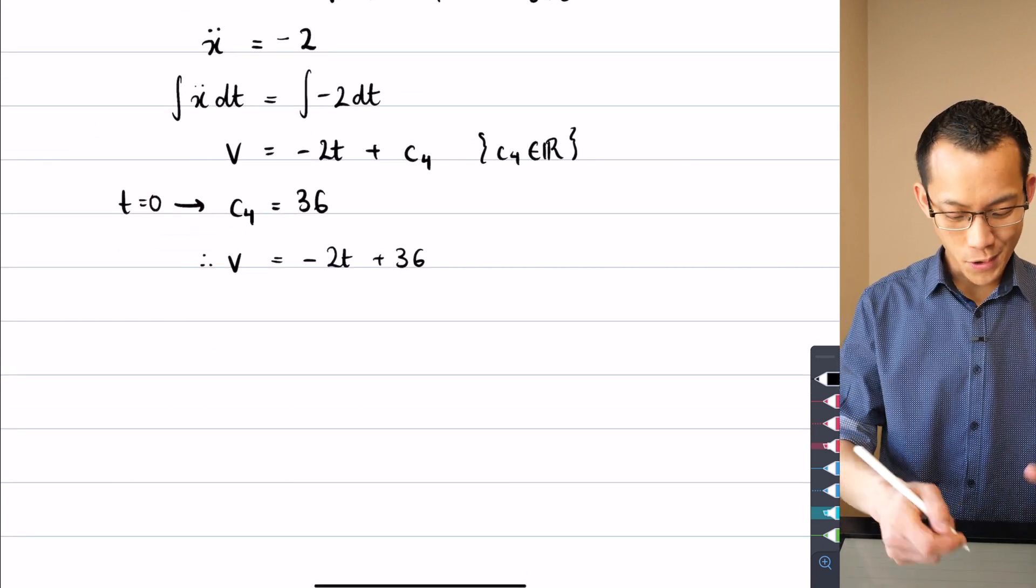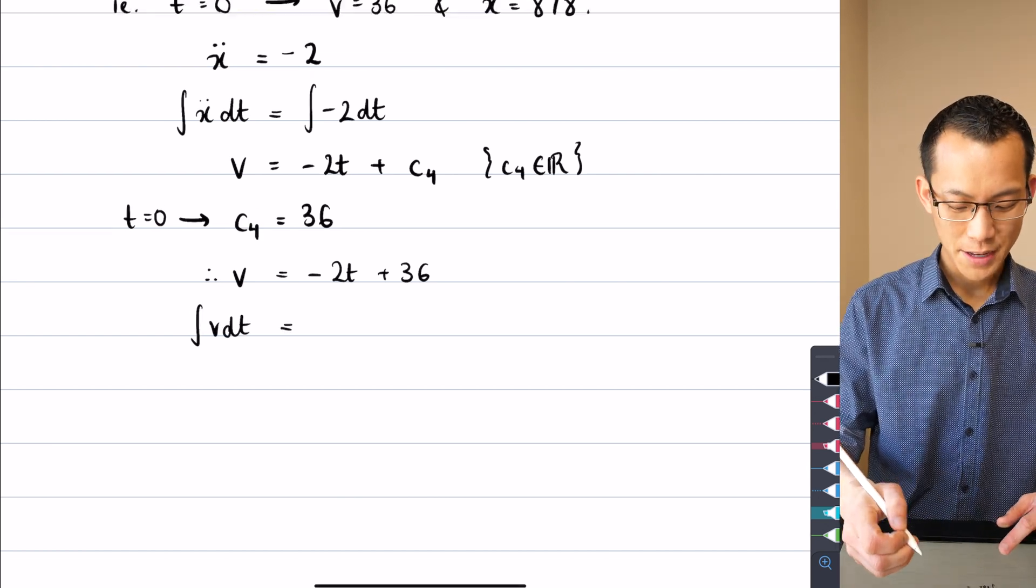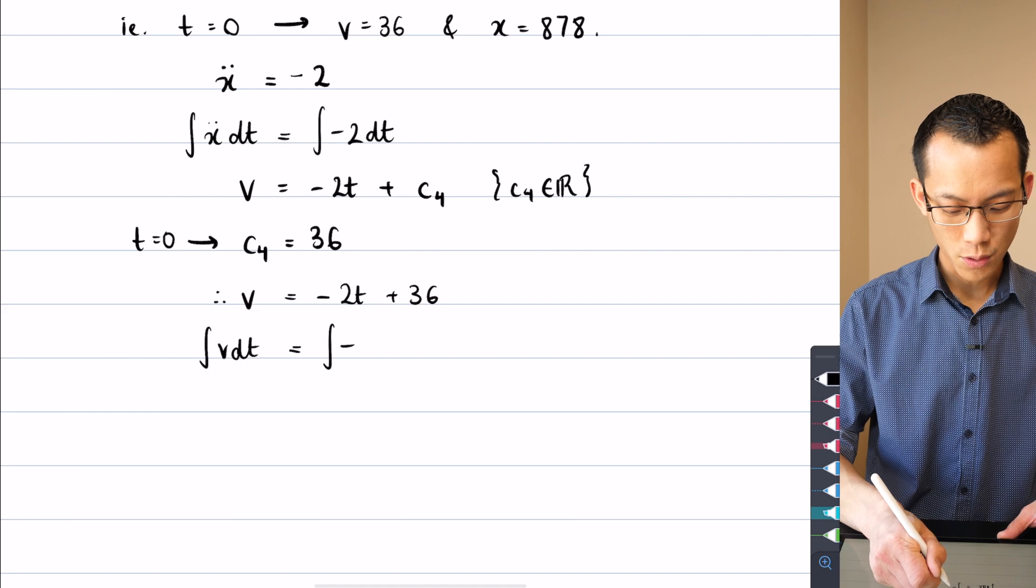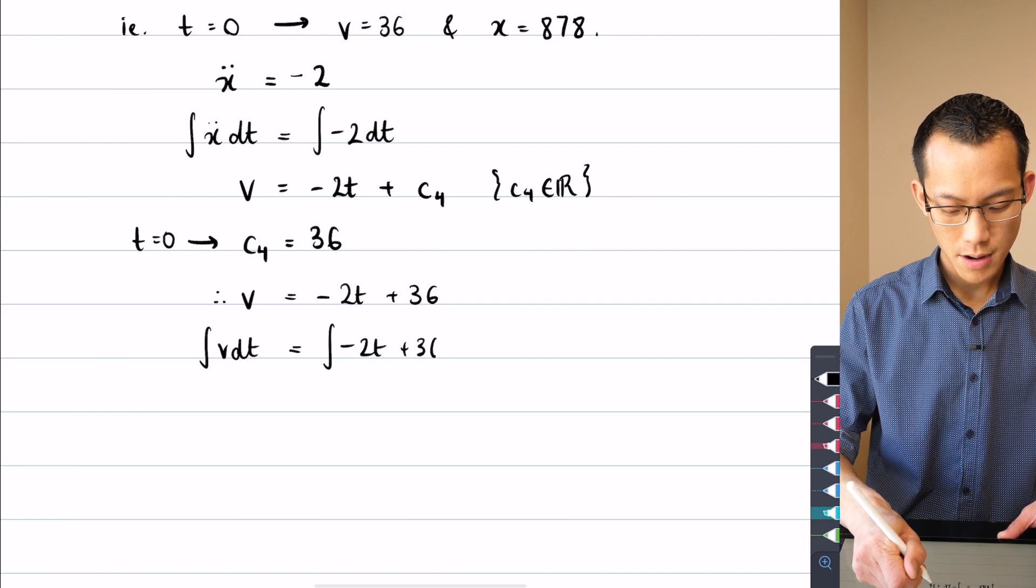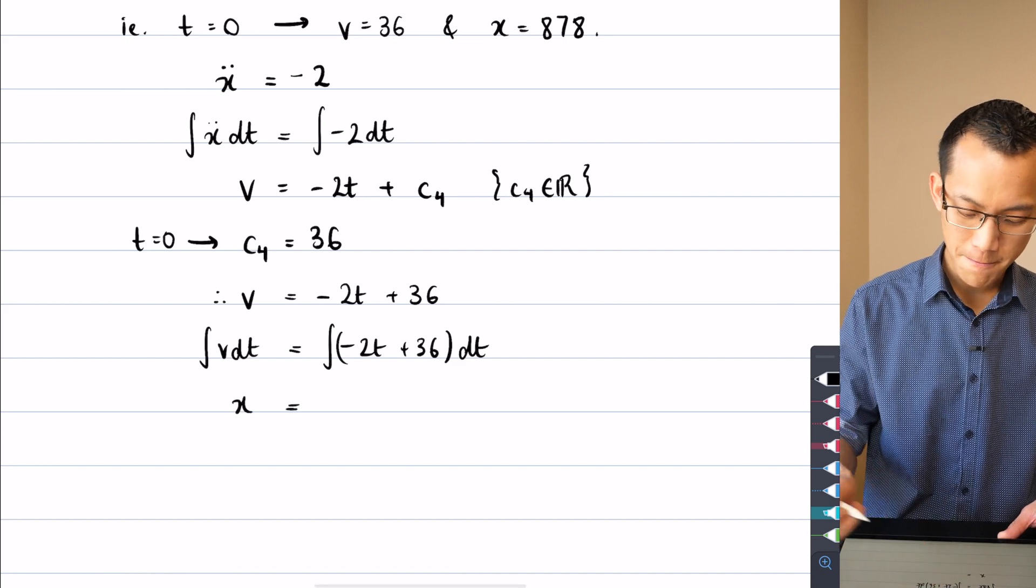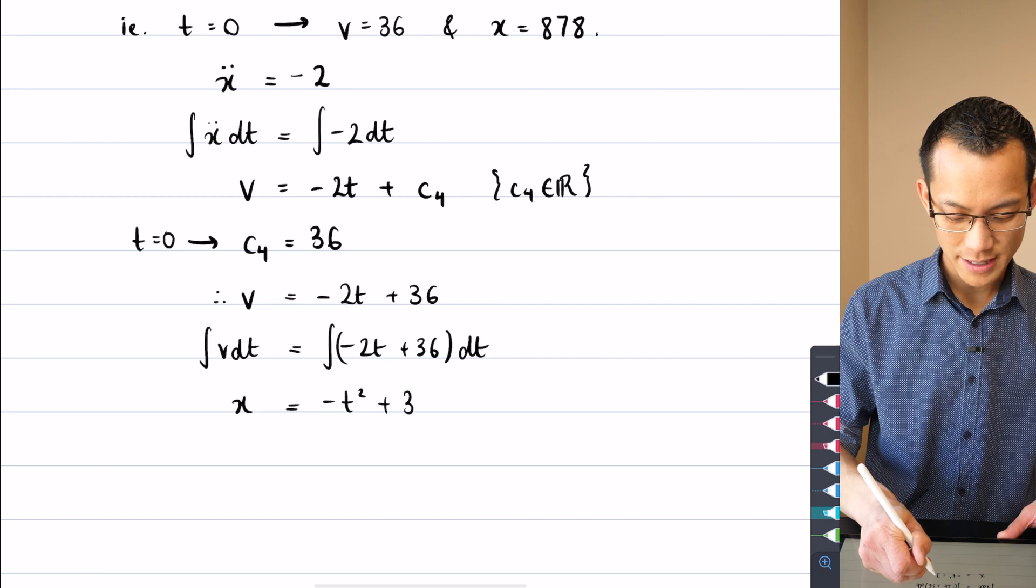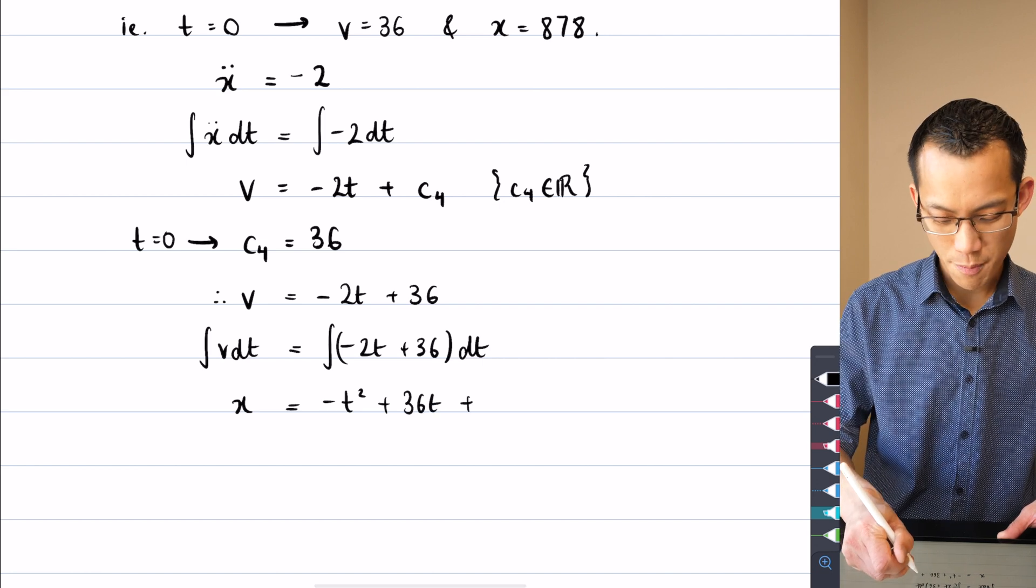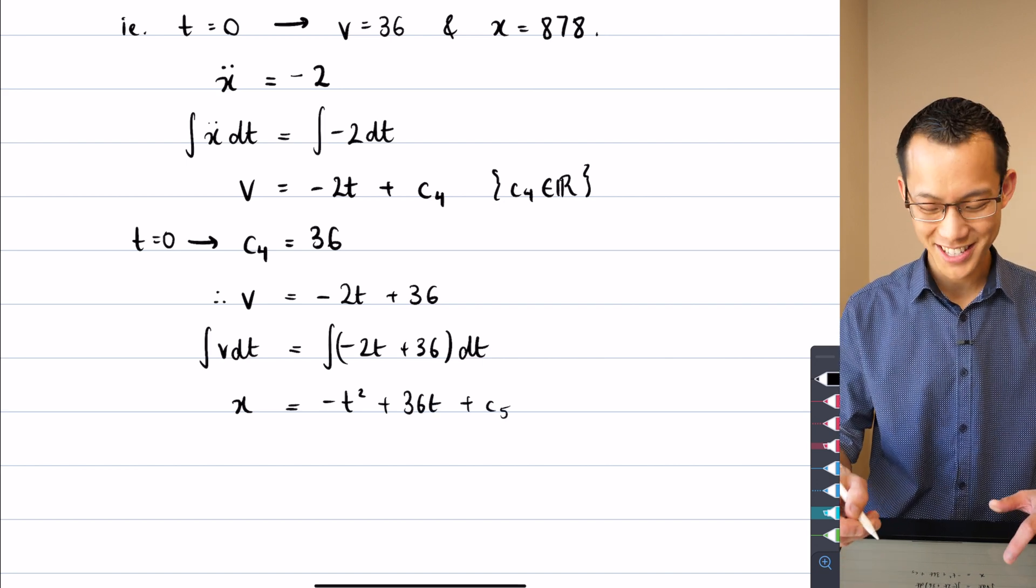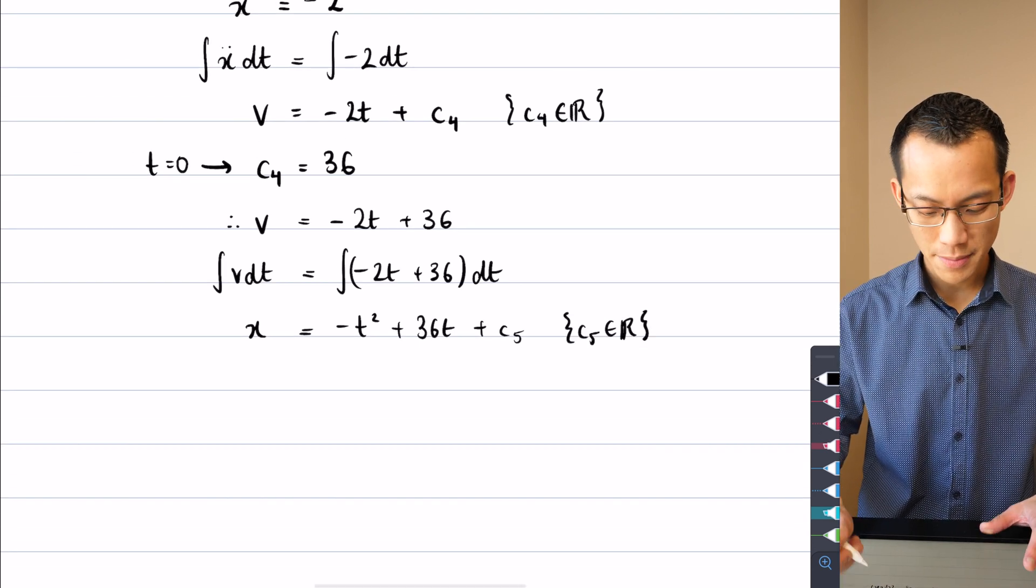And I'm going to use this condition up here. You can see when I put in T equals zero, I'm going to get C4. I'm going to say T equals zero implies that C4 is equal to 36. So that's just going to be my velocity expression, just substituting that back minus two T plus 36. And then I integrate one more time the integral with respect to time to get up to displacement, right? So this is going to be integral of all of this with respect to time. That'll give me displacement. What do I get here? This looks familiar. Minus T squared plus 36 T. And then I hope, I think this will make my final constant of integration. So I've got C5 being some other real number.